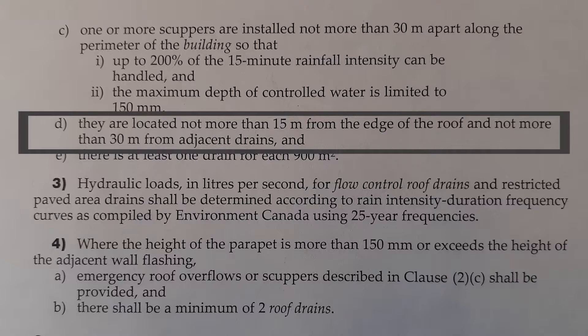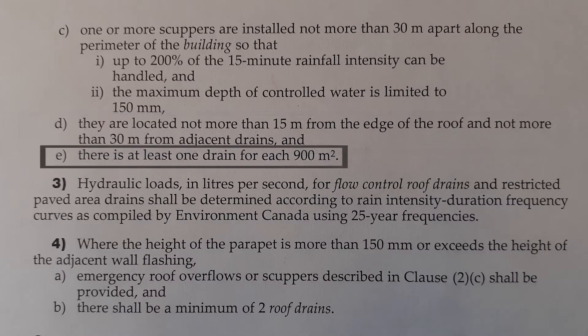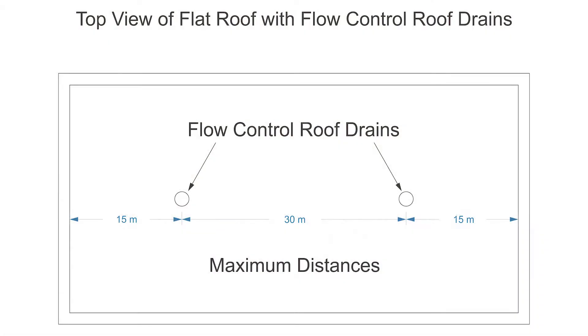Drains are not located more than 15 meters from the edge of the roof and not more than 30 meters from adjacent drains. And part E states there is at least one drain for each 900 square meters. This is to do with the location of the roof drains on the flat roof.